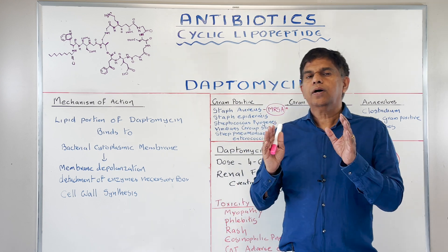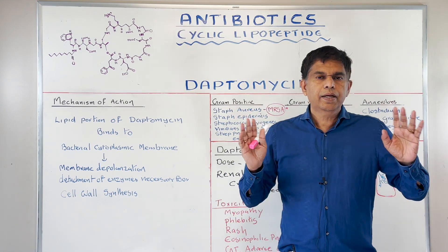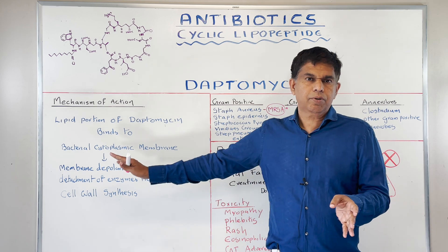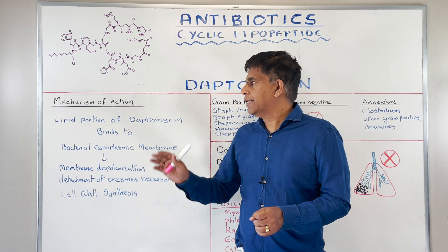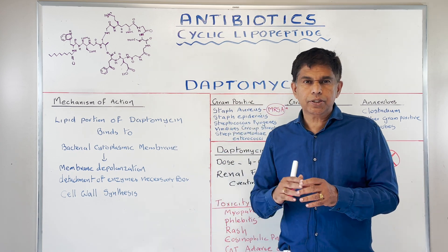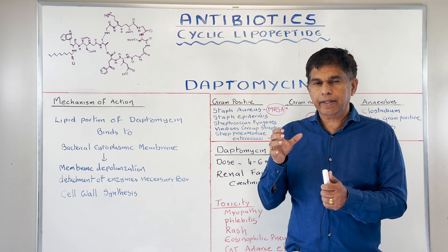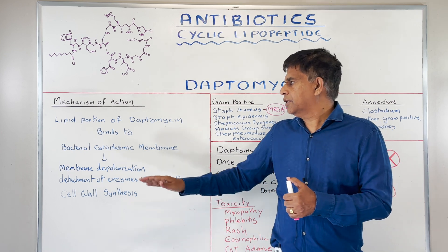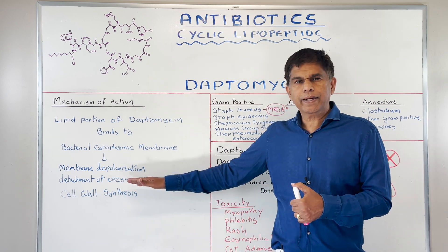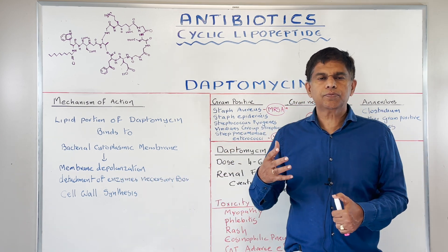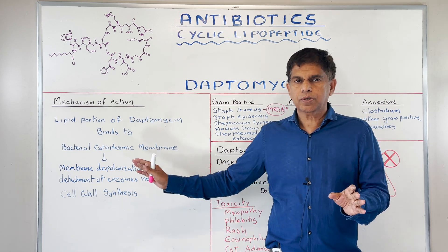Now, how does daptomycin — how does this antibiotic work? The mechanism of action is always important. If I'm writing a question, they always ask about this, so make sure you know it. The lipid portion of daptomycin binds to the bacterial cytoplasmic membrane, and then it creates a hole in the membrane. It also causes membrane depolarization and detachment of enzymes necessary for bacterial cell wall synthesis.